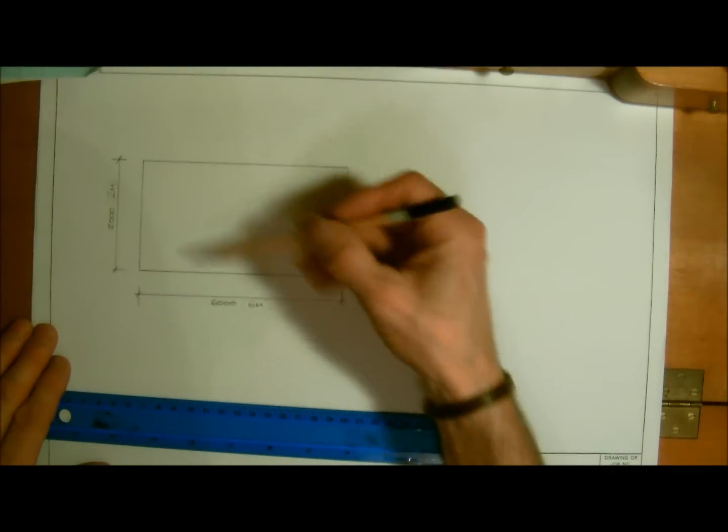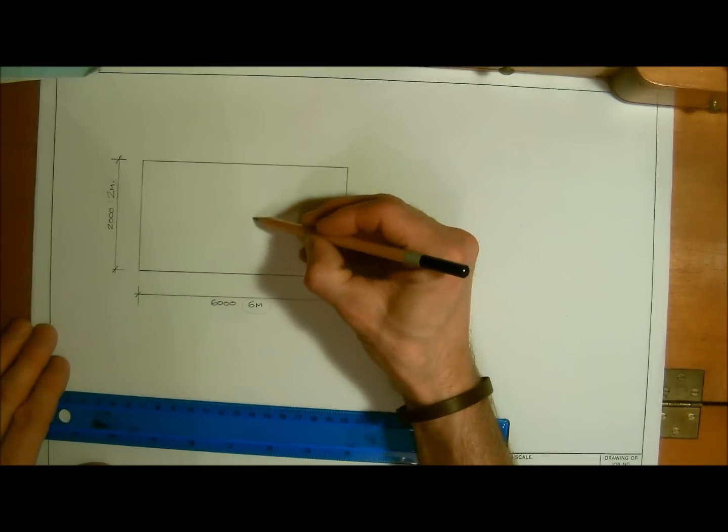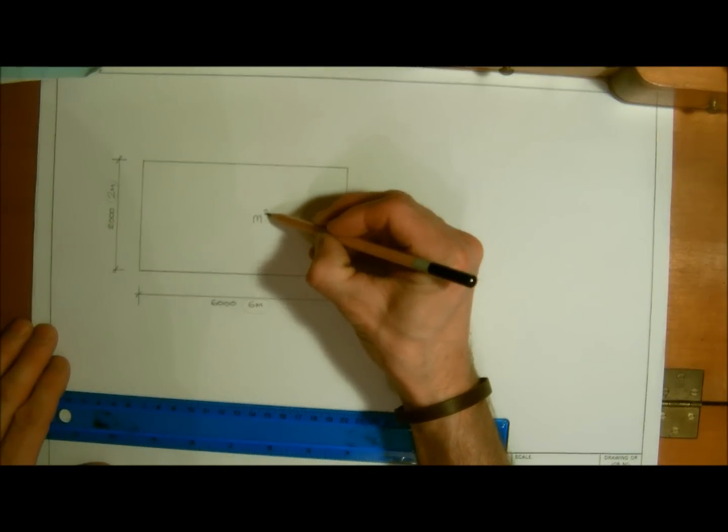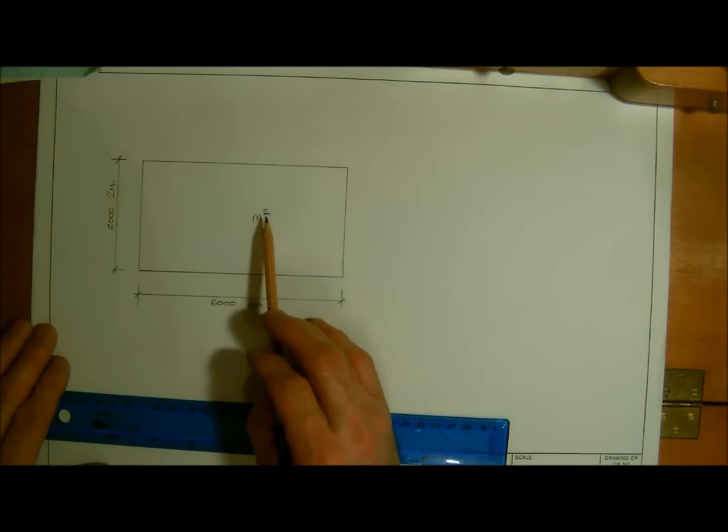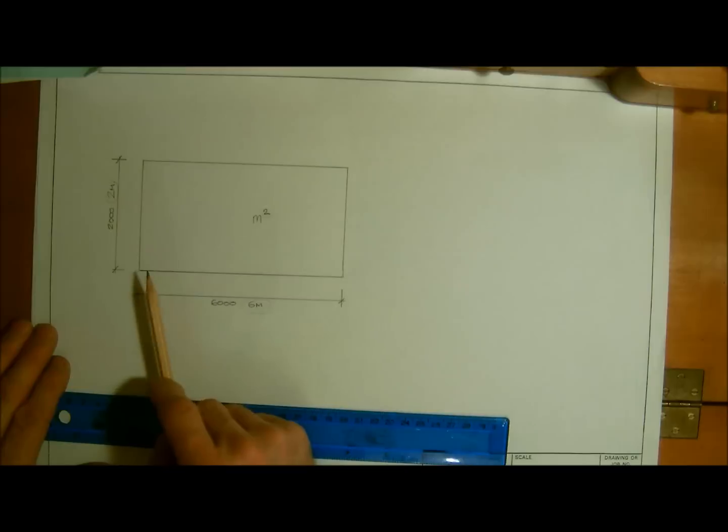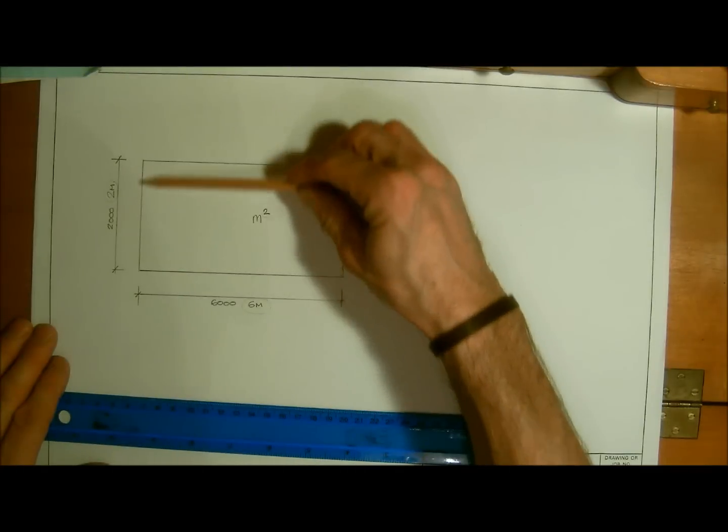But here you can see we've got two dimensions and surface area is always in meters squared. And the meters squared, the two, the little floating two, just tells us that we need two dimensions. Here the length of the wall and here the height.